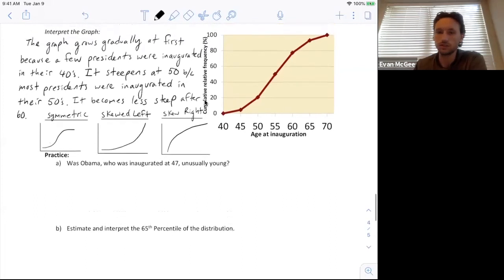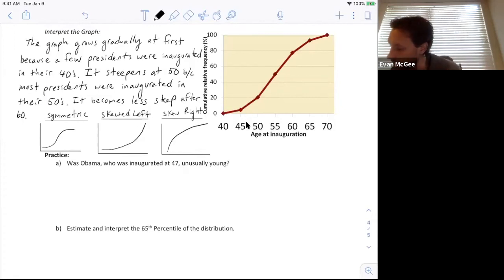So we can use these cumulative relative frequency graphs to answer all kinds of questions. For example, they want to know, was Obama, who was inaugurated at 47, unusually young? So basically what we want to do is we want to figure out his percentile. At the age of 47, was he older than most or was he younger than most? And we can find his percentile by using the chart here. If we look at the age of 47, which would be right about here, we follow this up. We can figure out what percentile he was by going over and matching it with the cumulative relative frequency.